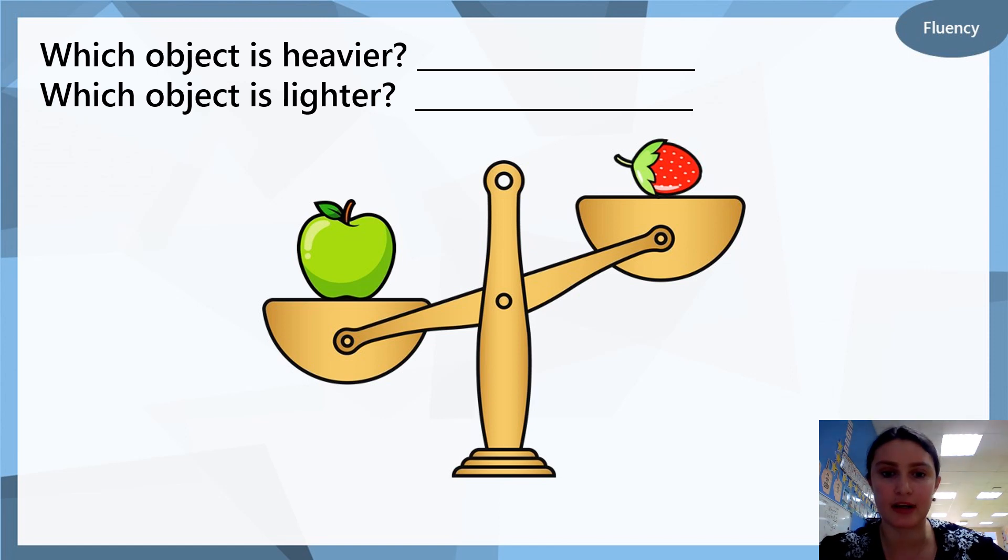So we're going to have a look at this scale here. On one side we have an apple and on the other side we have a strawberry. What I want you to do, I want you to take a piece of paper and write which object is heavier and which object is lighter. What do you think? You can pause the video here and write down your answers.